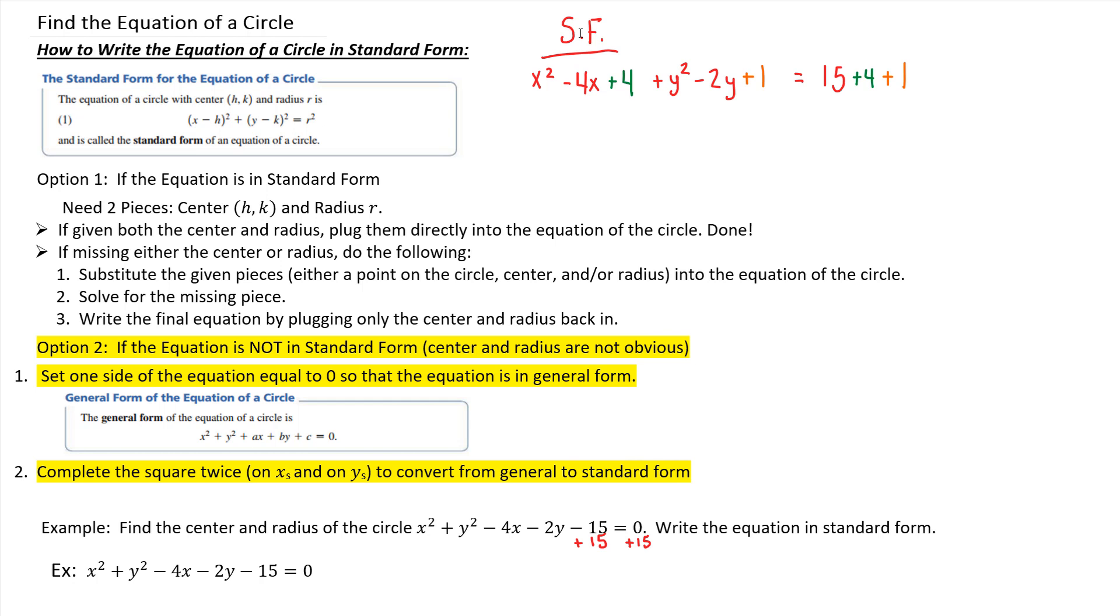So ultimately I've completed the square for the x's and completed the squares for the y's. That allows me to rewrite my equation now in a more standard form. That means I'm going to have a quantity squared plus a quantity squared equals a constant. We can see that the constant is 15 plus 4 plus 1, which is 20.